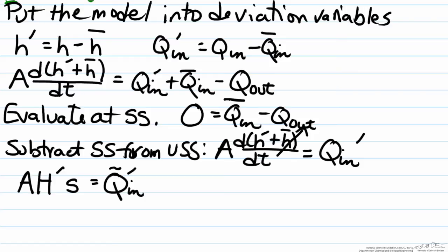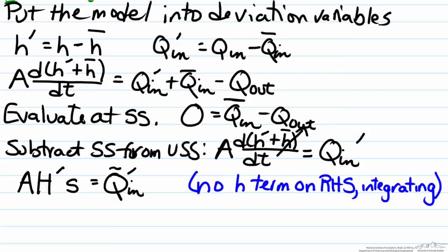So one thing that you'll notice from this equation in comparison to most transfer function models is that there is no H term on the right hand side, and this is something that is indicative of an integrating process, because an integrating process does not have any process feedback.